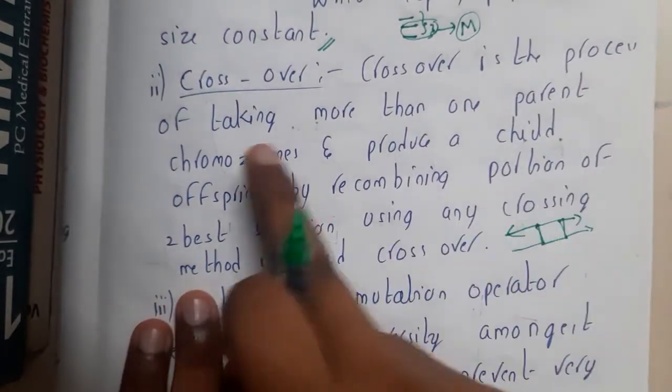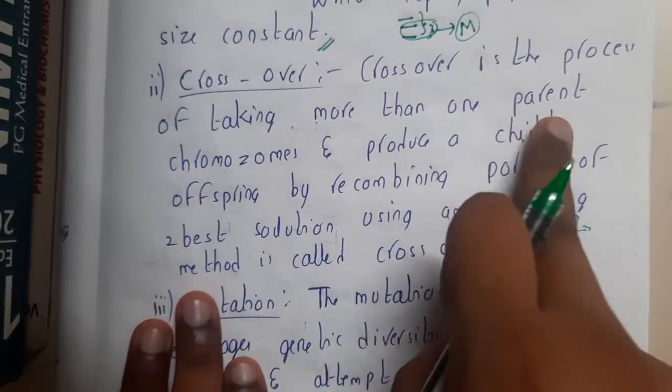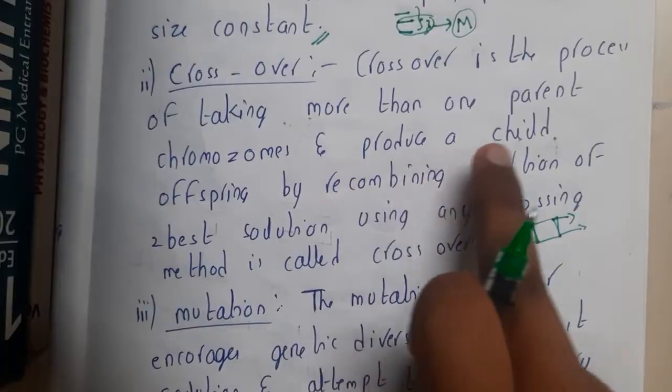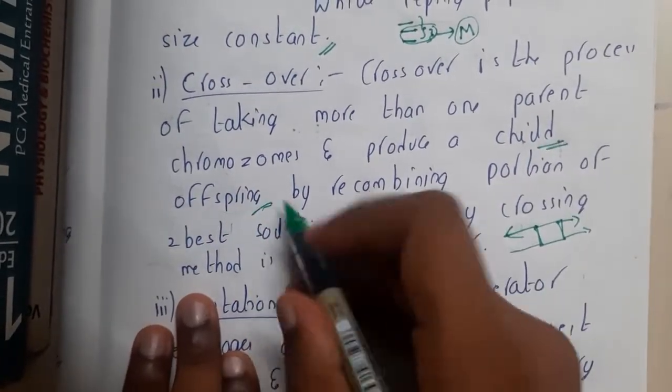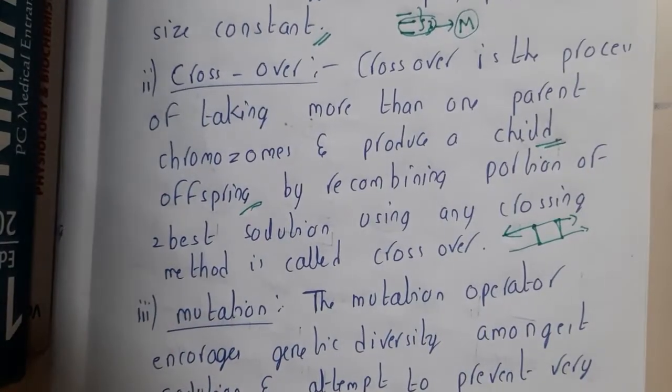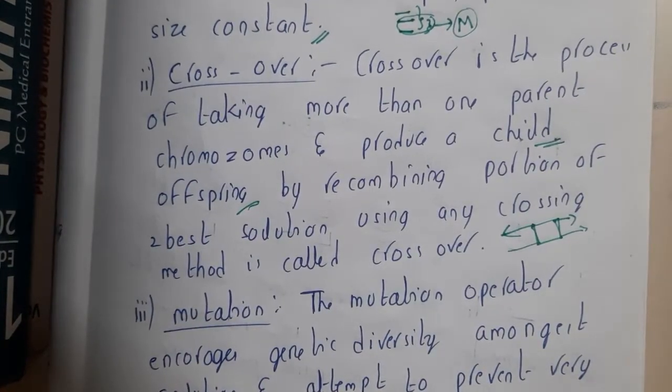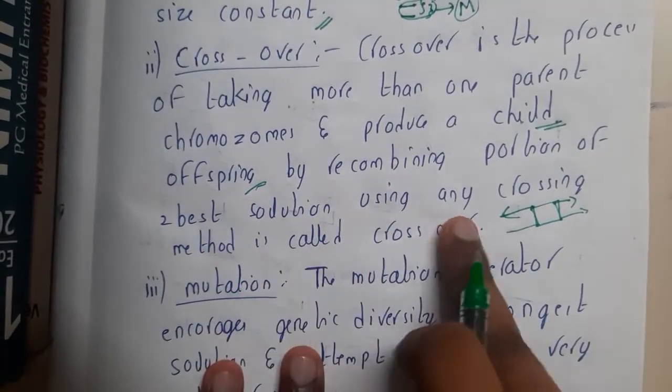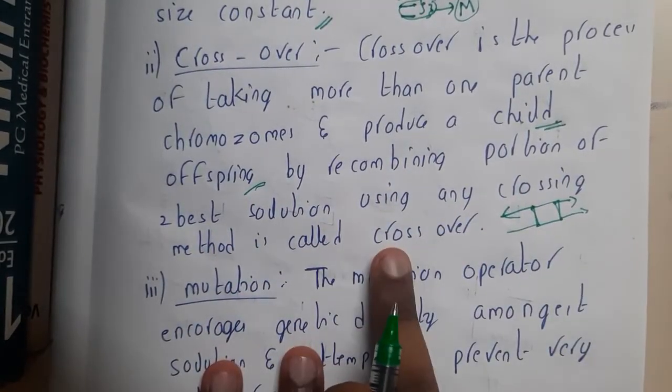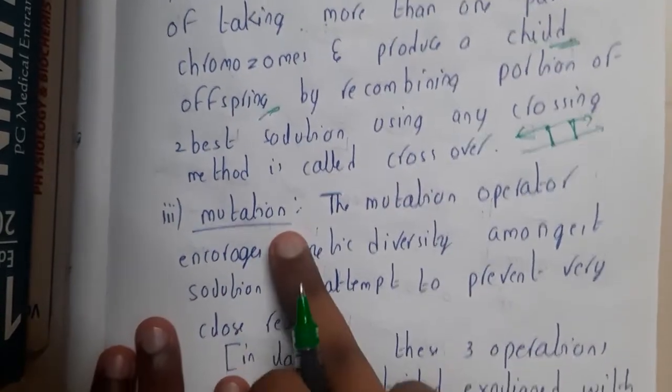Crossover is the process of taking more than one parent chromosome and producing offspring. It is called offspring - even skip the word child, because it will lead to wrong meaning. By recombining the portions of two best solutions using any crossing method.